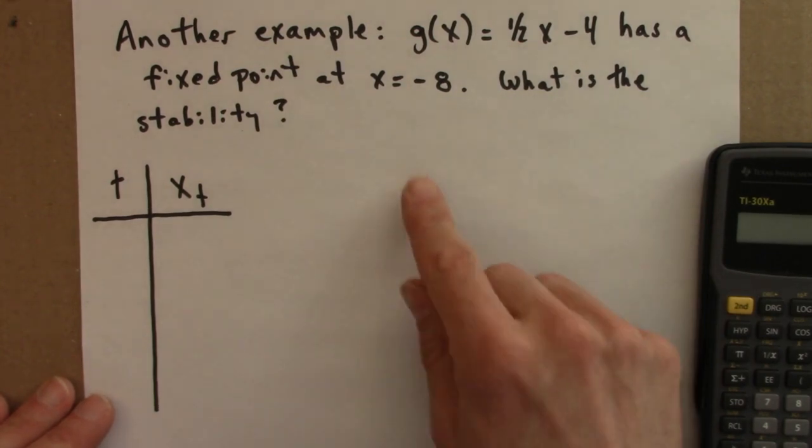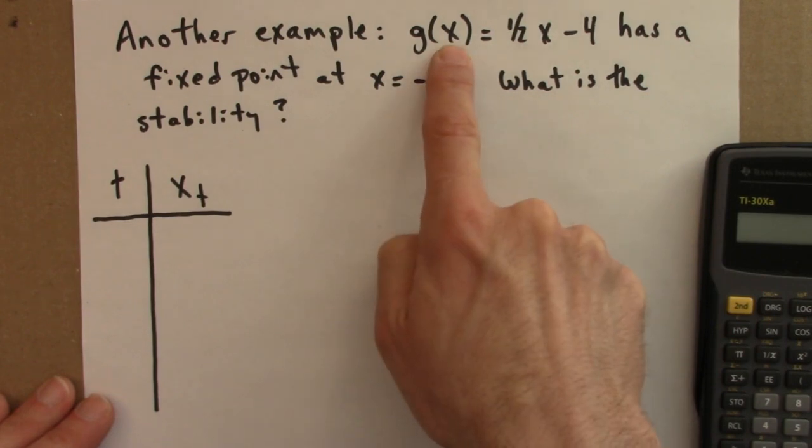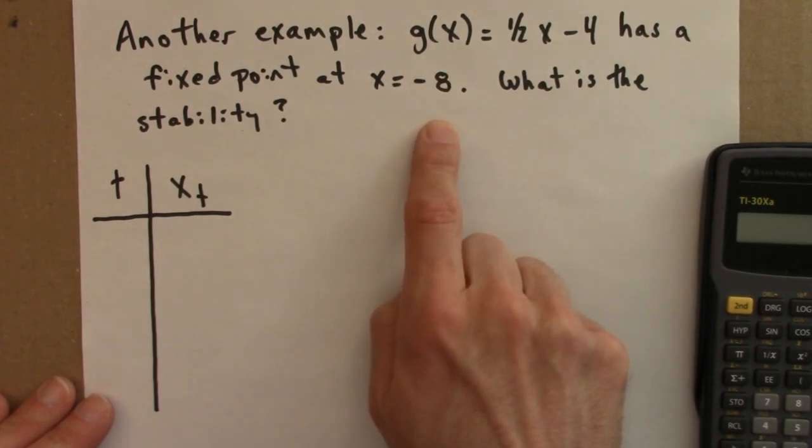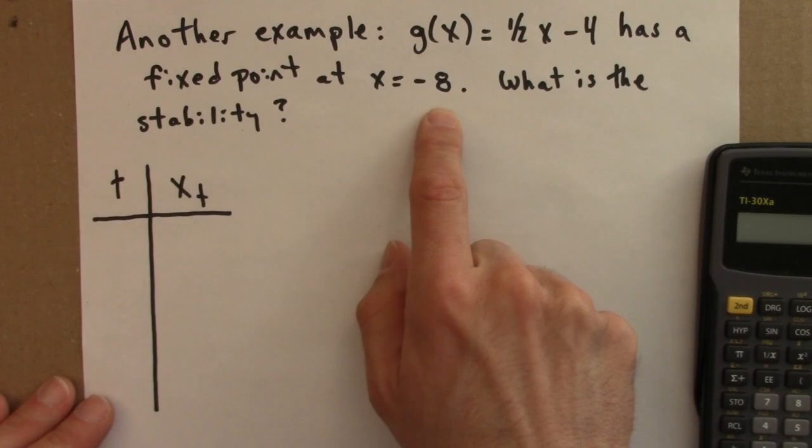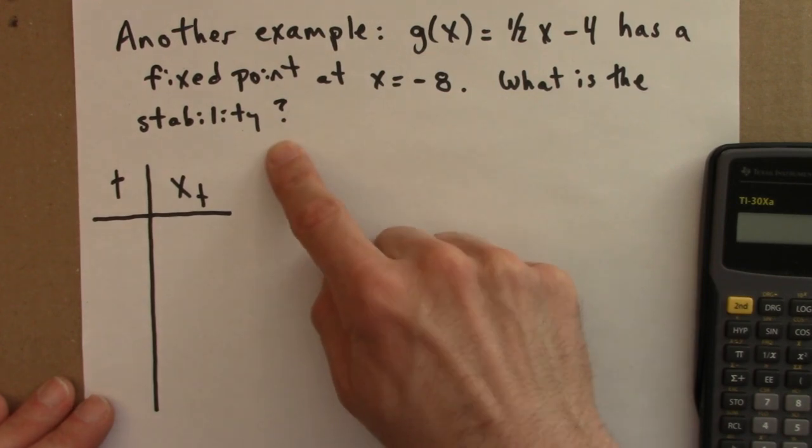And you can check this. If you plug minus 8 into this function, you'll get minus 8 out. So it has a fixed point at minus 8. How could we determine its stability?